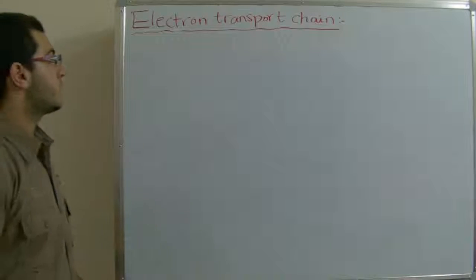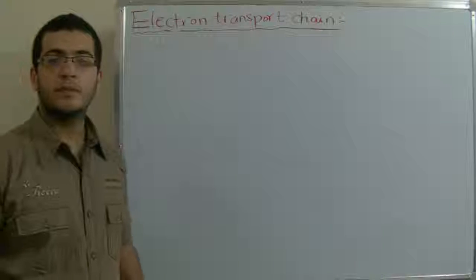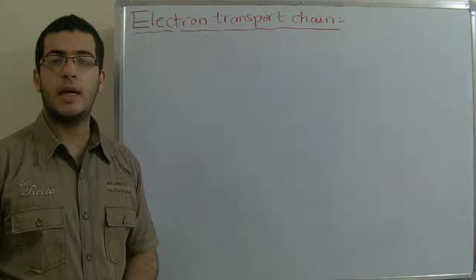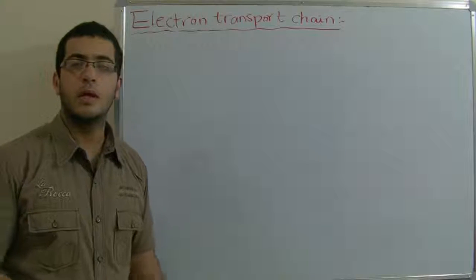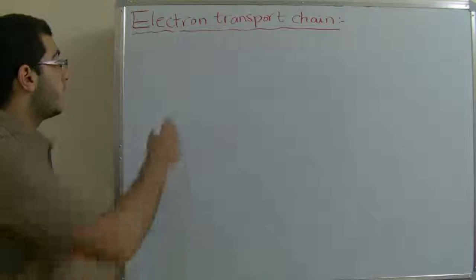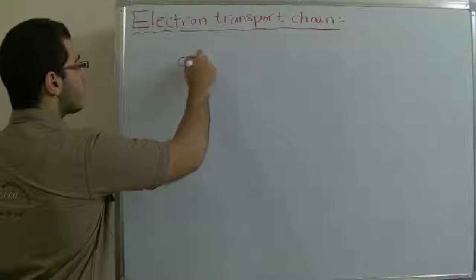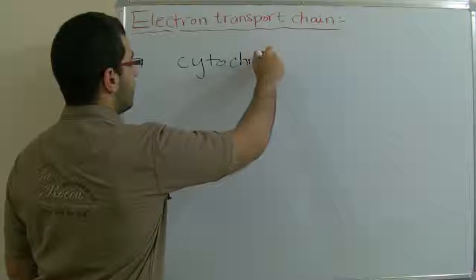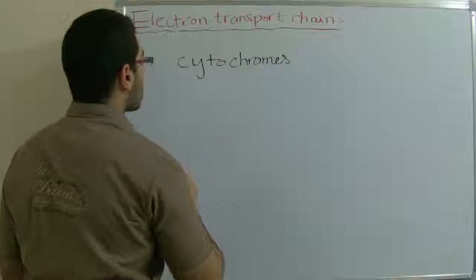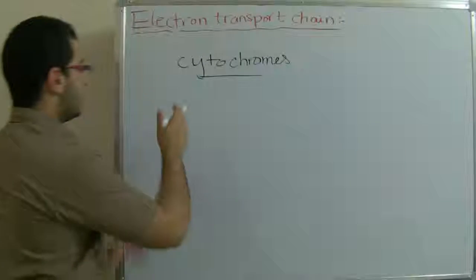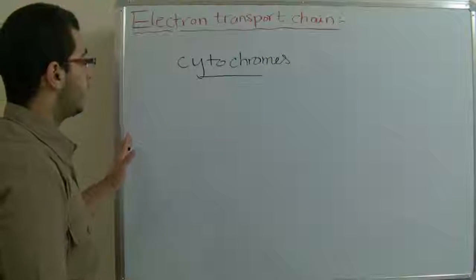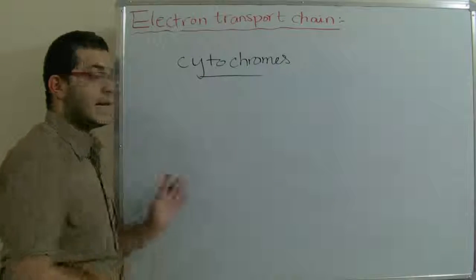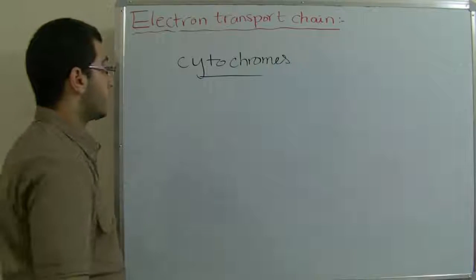In this process, after the Krebs cycle ends, all the NAD plus molecules and the ATP molecules pass through different electron carriers which are called cytochromes, through which the NAD plus and the FAD molecules move from one cytochrome to another as they are different in the energy levels.